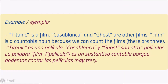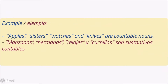Example: Titanic is a film. Casablanca and Ghost are other films. Film is a countable noun because we can count the films — there are three. Apples, sisters, watches, and knives are also countable nouns.